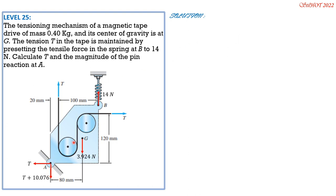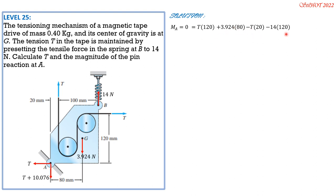To solve for T, set moment at A equal to zero, clockwise positive: T × 120 + 3.924 × 80 − T × 20 − 14 × 120 = 0. Rearranging: T = (14 × 120 − 3.924 × 80) / 100. So T = 13.66 N.